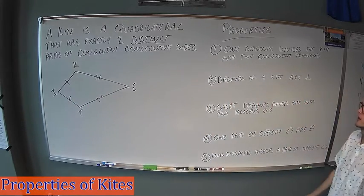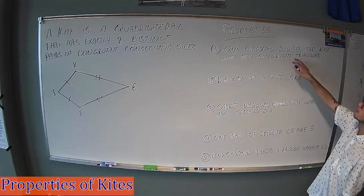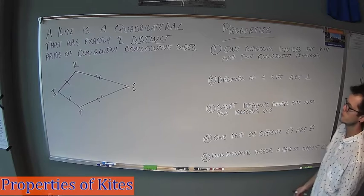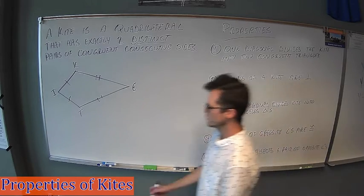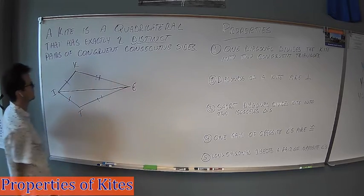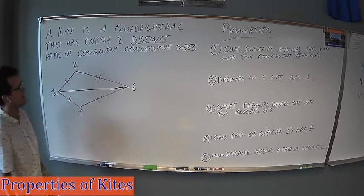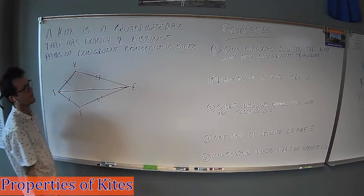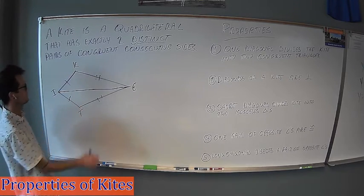Five properties, and we're going to spell it all out. First property, one diagonal divides the kite into two congruent triangles. So diagonal is when you connect two opposite vertices. For this one, here we go. I'm connecting I and E as our diagonal here. And the claim here, the property is that it creates two congruent triangles.